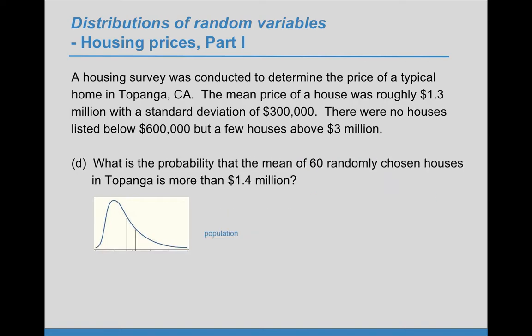Part D: What is the probability that the mean of 60 randomly chosen houses in Topanga is more than $1.4 million? Here, instead of selecting one value, we're going to select 60 and take the mean.